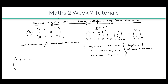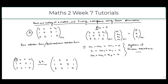We start with the matrix: [2, 4, 0, 2 / 1, 0, 3, 1 / 3, 2, 1, 0]. First, we make the (1,1) element equal to 1 by taking (1/2)·R1, giving [1, 2, 0, 1] with remaining rows unchanged. Then to eliminate below the pivot, we do R2 ← R2 − R1, giving second row [0, −2, 3, 0], with the third row remaining the same.